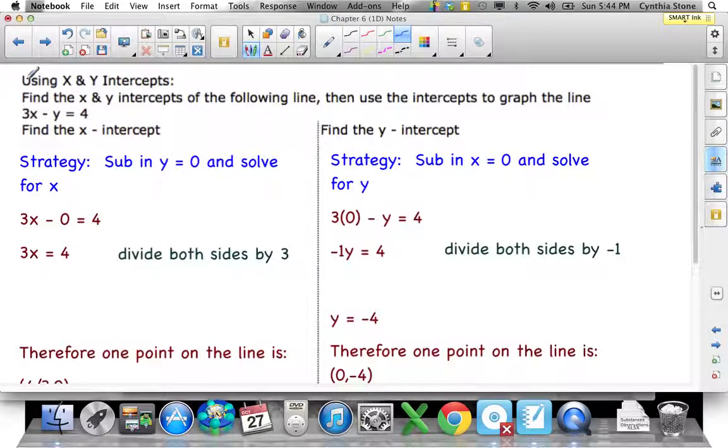Using x and y-intercepts, we're going to find them first of this form of an equation, a form of a linear relation. And then we're going to use those intercepts to graph the line. Just split the page, first we'll find the x-intercept, and then the y.